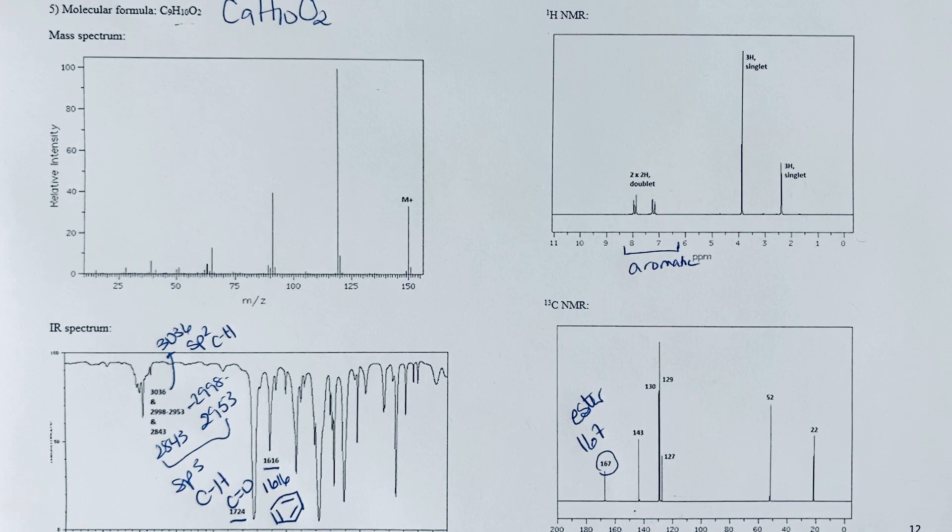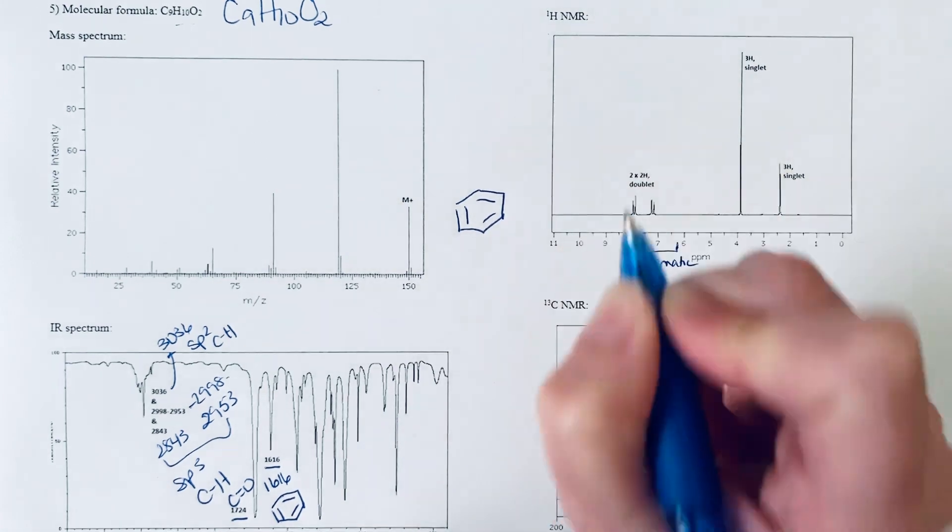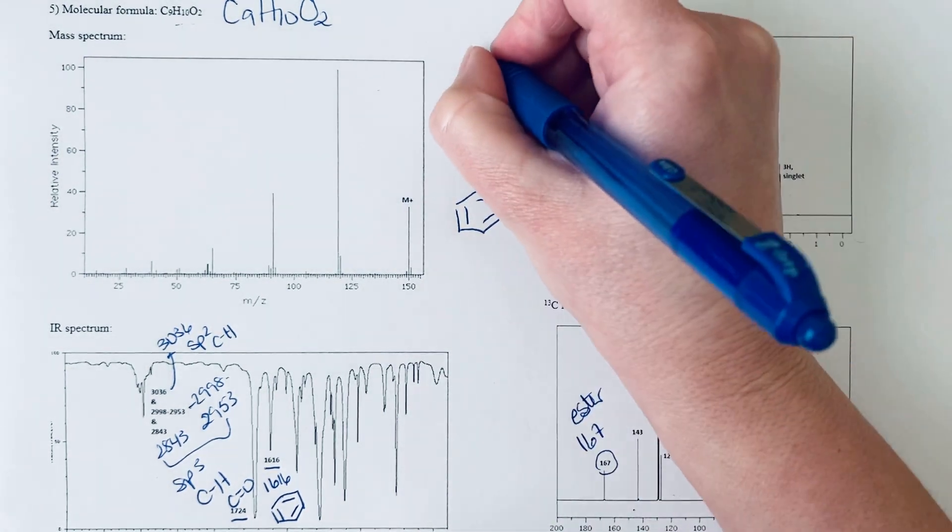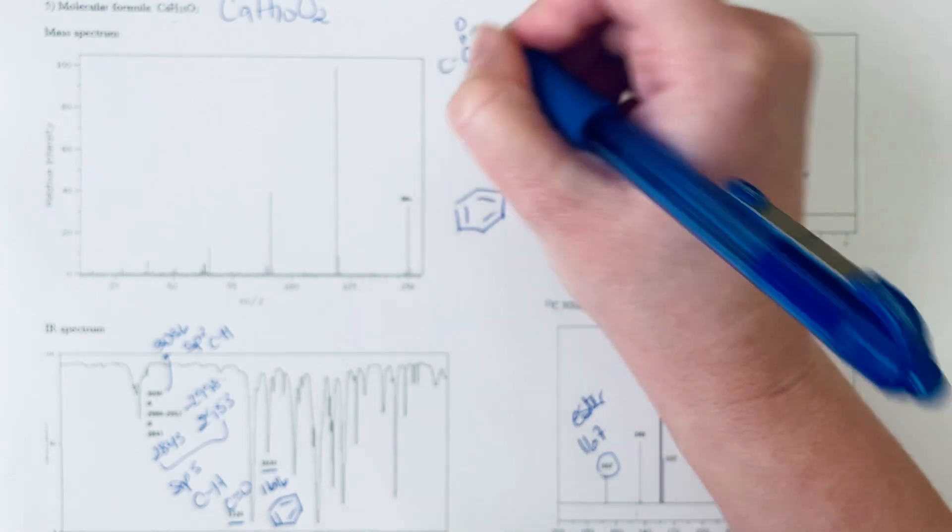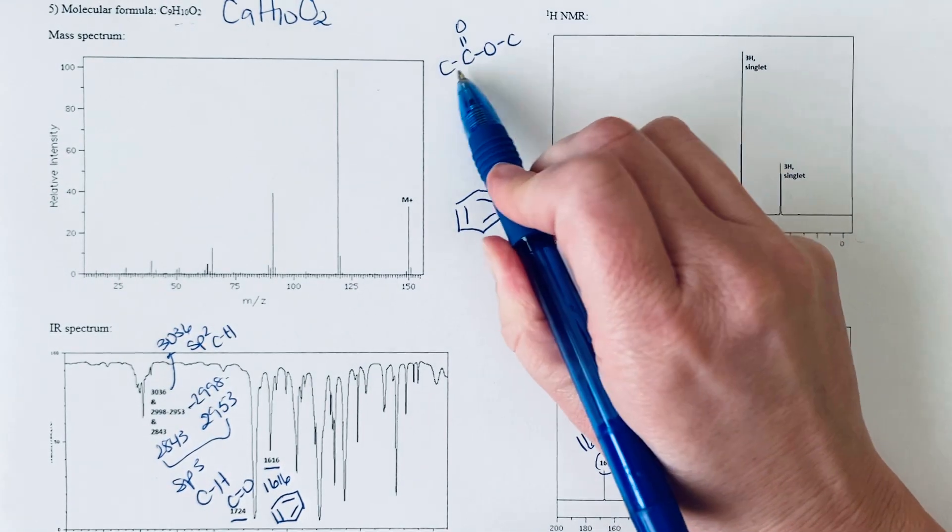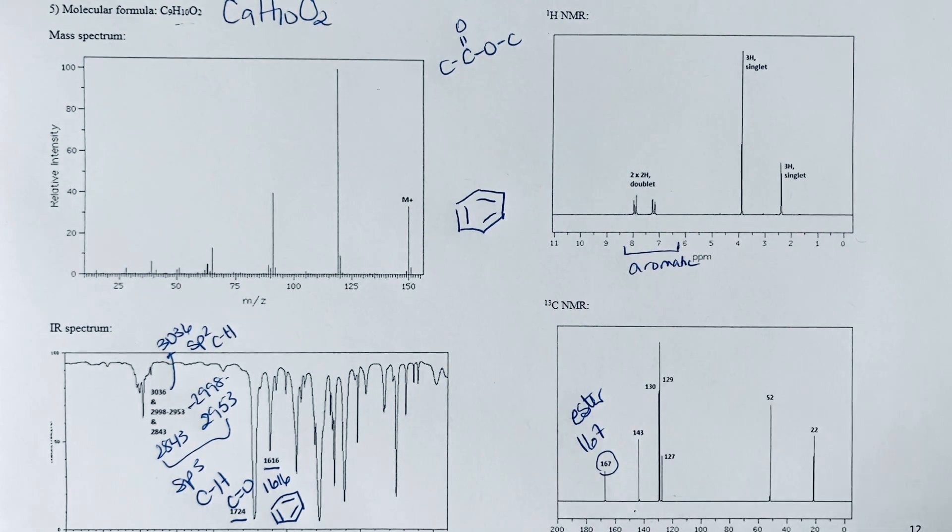We know that we have a benzene ring and we know that we have an ester, so we actually know quite a bit about this molecule already. Let's go ahead and draw our benzene ring. An ester is always going to have this kind of framework, so we really want to know what's on this side, what's on this side of our ester.